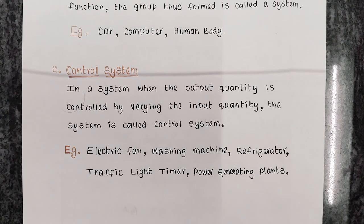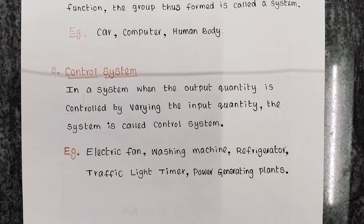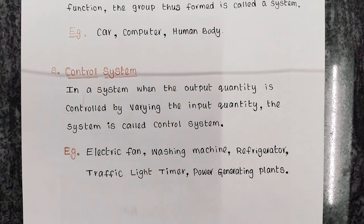For the electric fan, speed is the output quantity and the regulator is the input quantity. By changing the regulator, we are controlling the output quantity — speed.